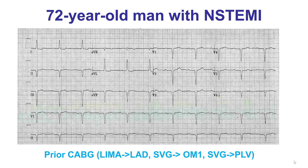The patient had previous CABG with LIMA to LAD, SVG to OM, and SVG to the posterolateral vessel, and presented with non-ST elevation myocardial infarction. He did have old Q waves in the precordial leads and the inferior leads, and ST segment depression in lead 1 and AVL.